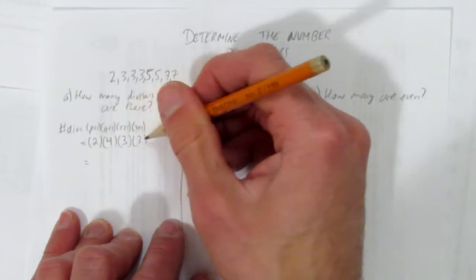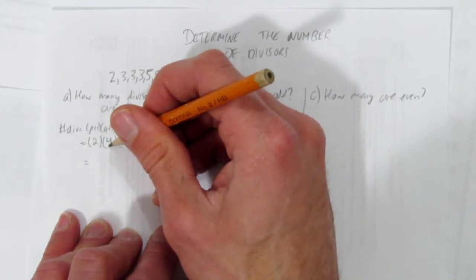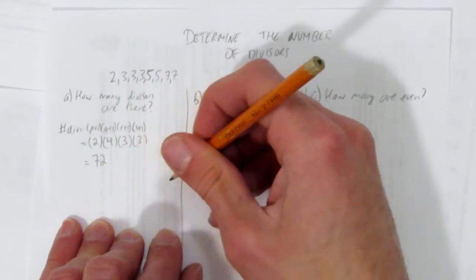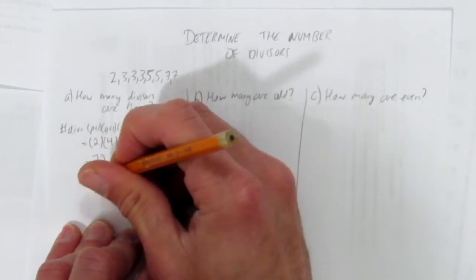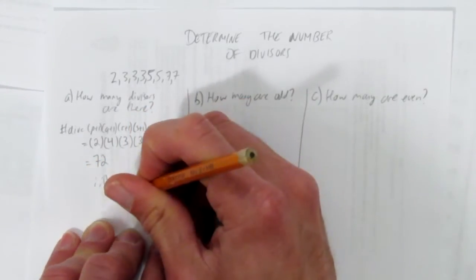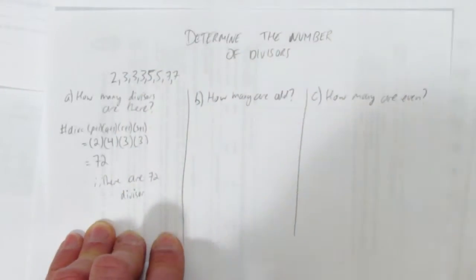And now, multiply those together. You can do that in your head or on a calculator. 2 times 4 is 8, 8 times 3 is 24, 24 times 3 is 72. In other words, there are 72 divisors, different numbers that divide the original number made up of these prime divisors.